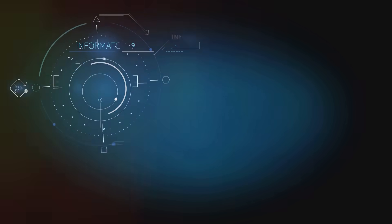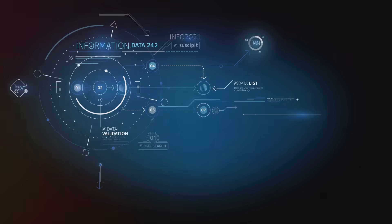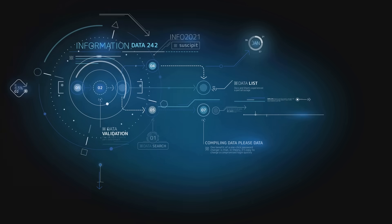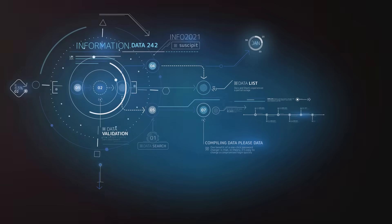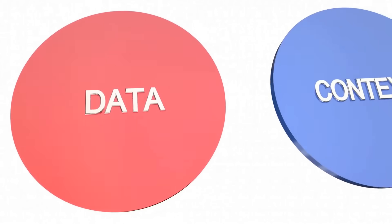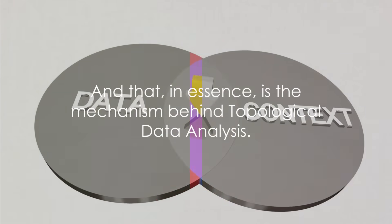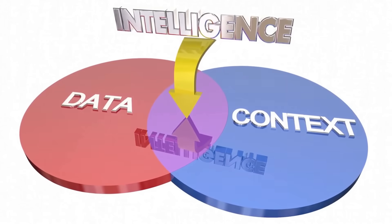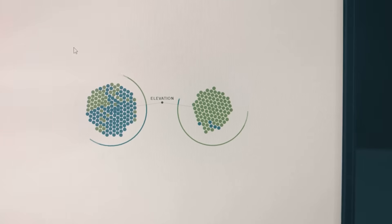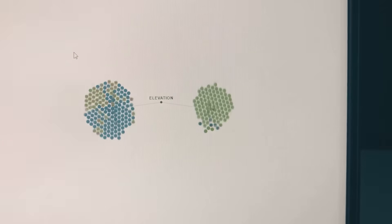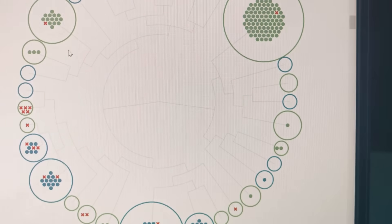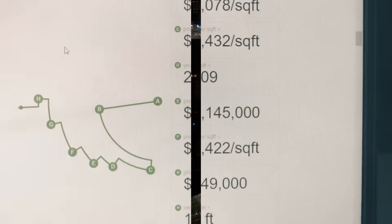Finally, we visualize these insights using what's known as a persistence diagram. This diagram plots the birth and death of each shape we've identified, providing a visual representation of the data structure. And that, in essence, is the mechanism behind topological data analysis. The beauty of TDA lies in its ability to reveal complex patterns in data that other methods might miss — a powerful tool that's changing the way we understand and interpret data.